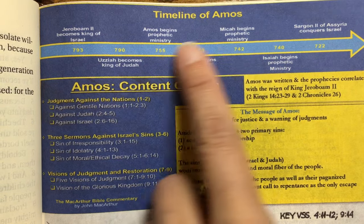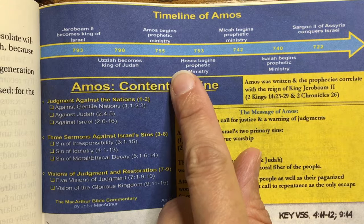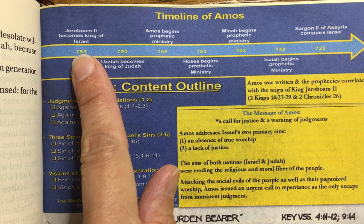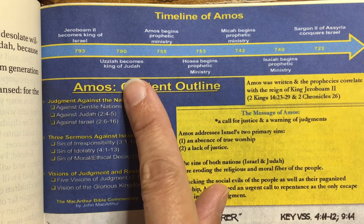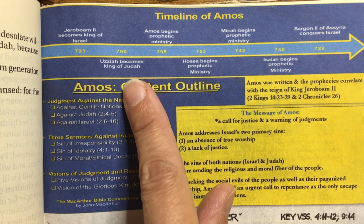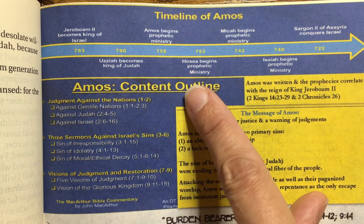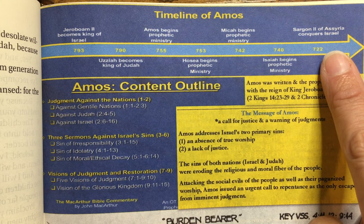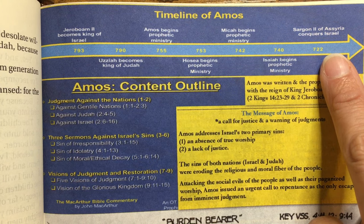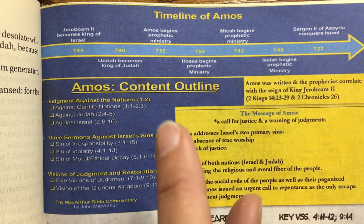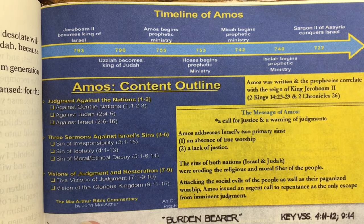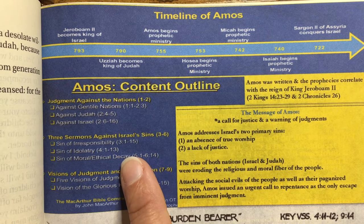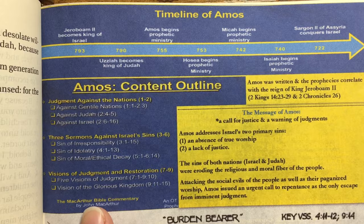The first thing I wanted was a timeline of Amos of where it falls in history. We see it's Jeroboam the Second. We can look to see when he reigned — Jeroboam was the king of Israel, Uzziah became the king of Judah. Amos began his prophetic ministry, and we have Hosea, Micah, Isaiah, and then the Assyrian conquest of Israel — a huge event in history. This comes from the MacArthur Bible commentary, and it gives you an outline of the book.